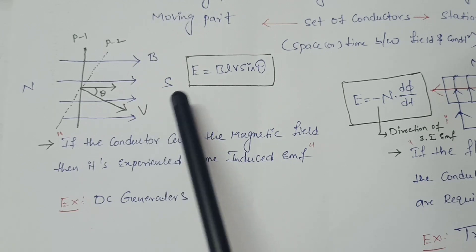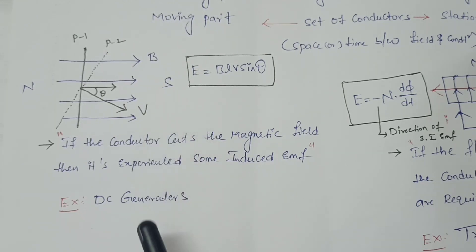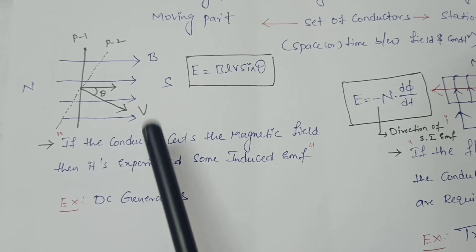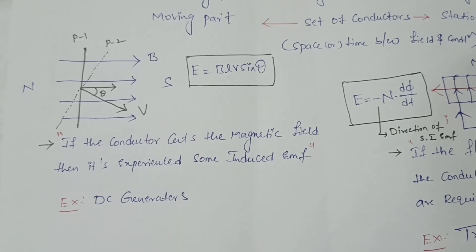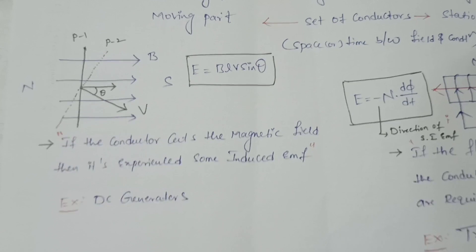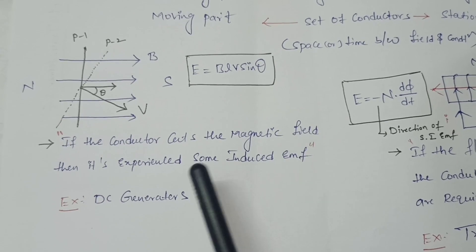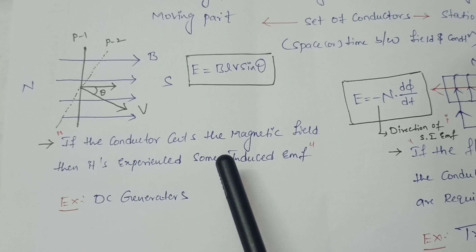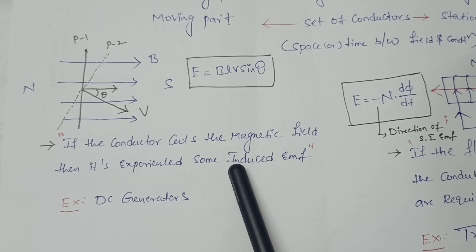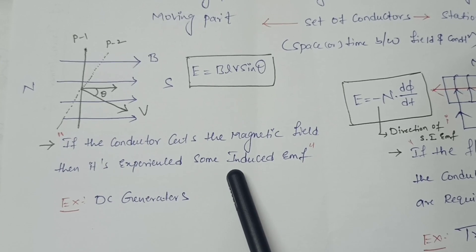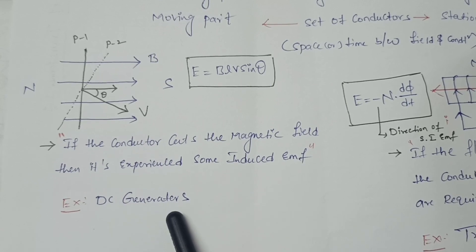As an example, the application of dynamical induced EMF — DC generators are the best example. When the conductor cuts the magnetic field, it experiences an induced EMF. That induced EMF is called dynamical induced EMF.